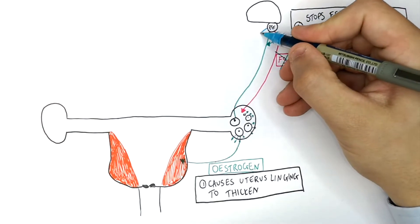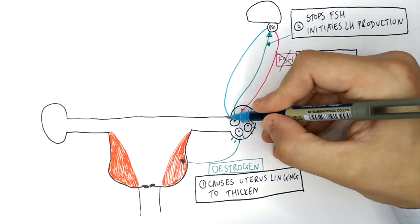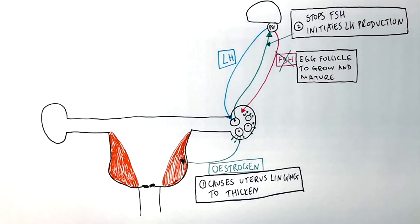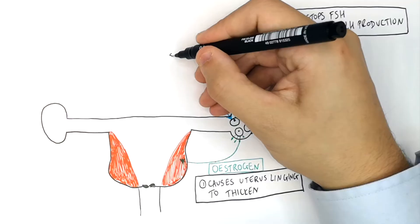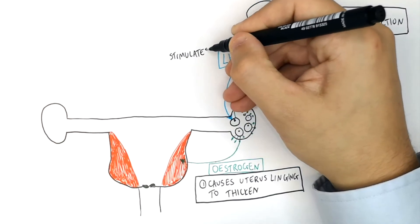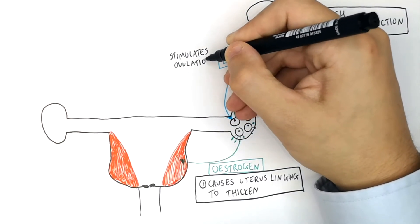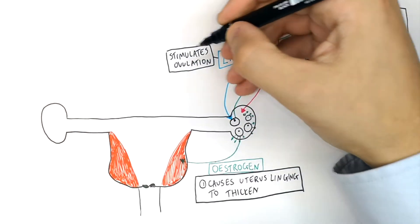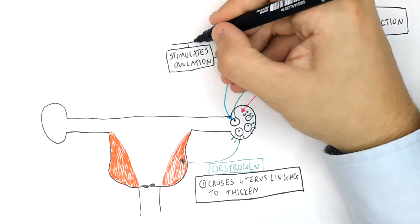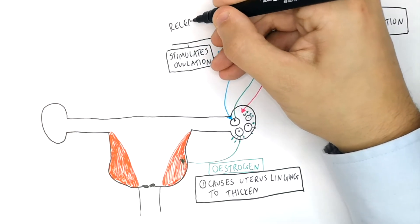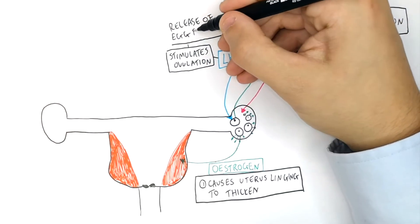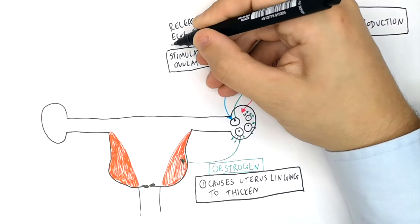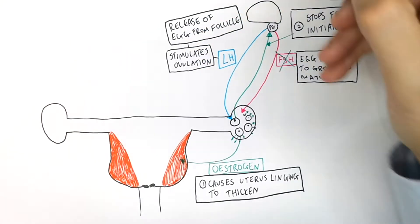Now the pituitary gland secretes LH. LH is secreted by the pituitary gland and this causes ovulation — it stimulates the release of an egg from the egg follicle. This is called ovulation.